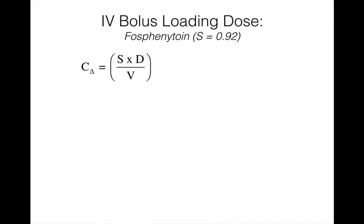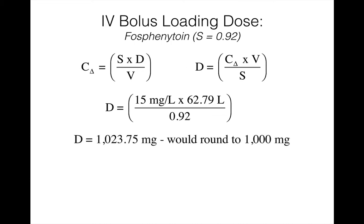To determine the IV bolus loading dose, we use the following formula: C change equals S times dose over volume of distribution. Because it's an IV dose, we don't need the bioavailability fraction F, but that could be included if an oral loading dose was used. To solve for dose, we convert the equation to dose equals C change times V divided by S. Remember, S is the fraction of dose that is equal to phenytoin. For fosphenytoin, S is 0.92. The concentration change that we desire is 15 milligrams per liter, the volume of distribution is 62.79 liters, and the S fraction is 0.92.